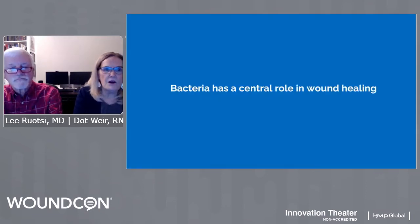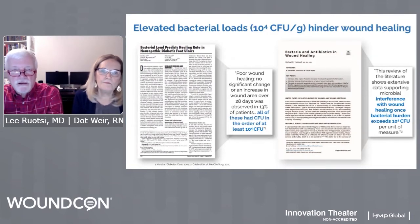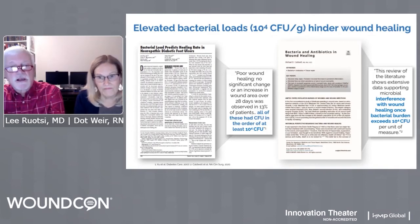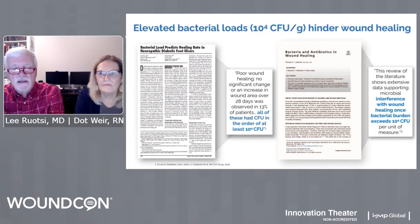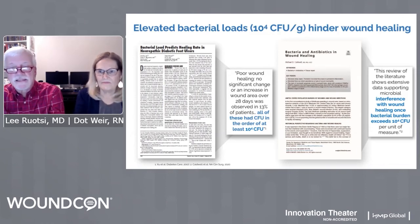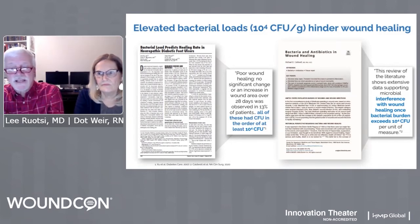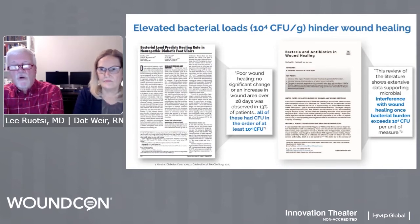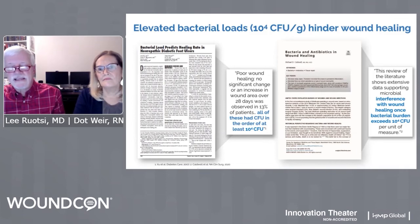There is a wealth of studies and papers supporting Moleculite. All of these had colony-forming units in the order of at least 10 to the fourth CFU per gram of tissue — you're going to hear this number a lot tonight. An extensive literature review shows data supporting microbial interference with wound healing once bacterial burden exceeds 10 to the fourth colony-forming units per gram of tissue. The trick is that without a device like Moleculite, our clinical sense and our eyeballs don't give us information as accurate as what we need.